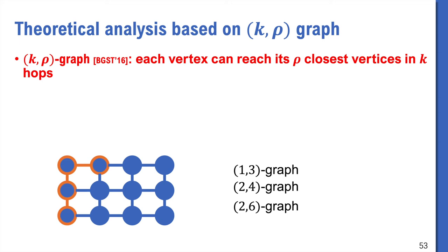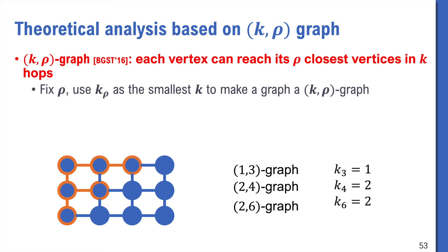Because by going out 2 hops, everyone will reach 6 closest vertices but not 7. For this rho, we use k-rho as the smallest k that makes this graph a k-rho graph. So for this graph, k3 is 1, k4 is 2, k6 is also 2. Also we can see that k_n is just the shortest path tree depth.